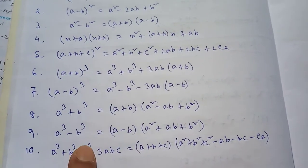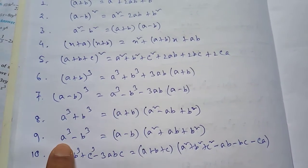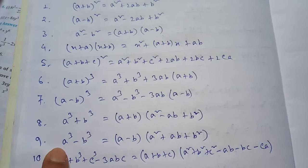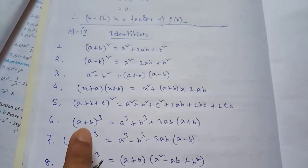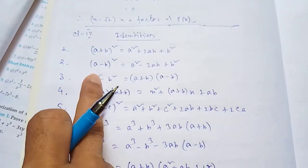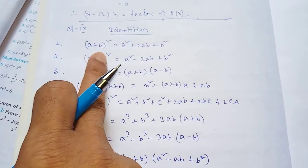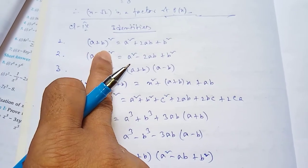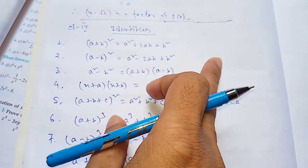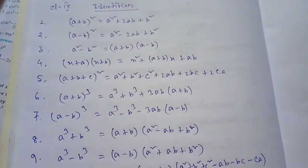So these are the identities you have to learn by heart. In place of a and b, if you write x and y, that will also be correct — it's okay. For example, in number 1, in place of a plus b whole square if you say x plus y whole square, that is correct.